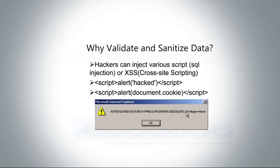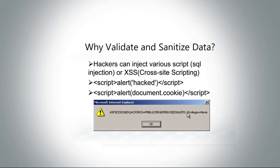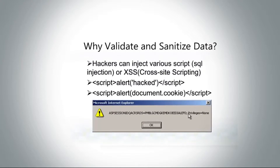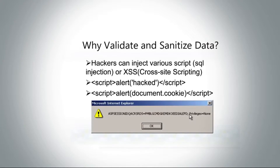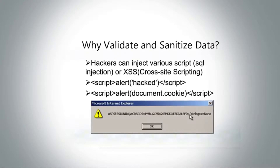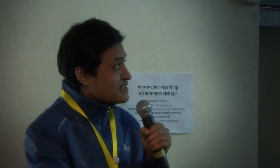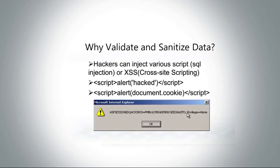I have listed some of the things a hacker can do if a theme or plugin is not properly validated. Point number one: hackers can inject various scripts. SQL injection and cross-site scripting are very common ways that hackers manipulate code — this is a very big topic that deserves its own session. Here is a simple example of a hacked script: it creates a pop-up and shows hacked information.